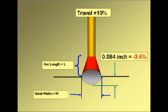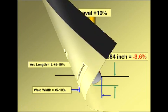From this base condition, we'll check to see what the effect is of increasing travel speed by 10%. The penetration, as noted, will decrease to .084 inches, or minus 3.6%.